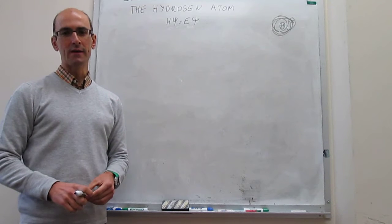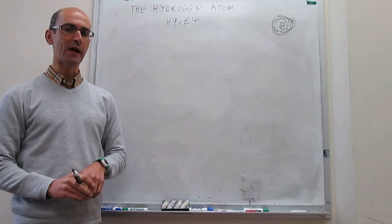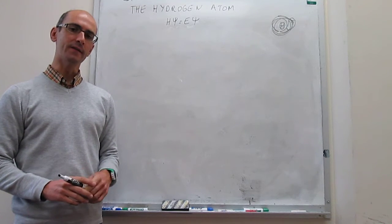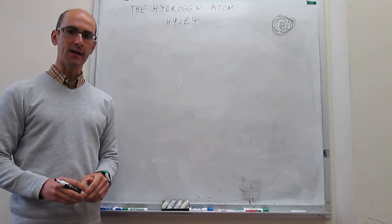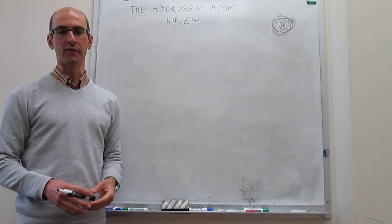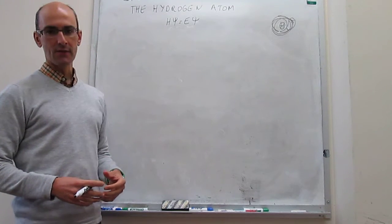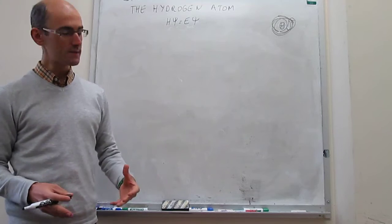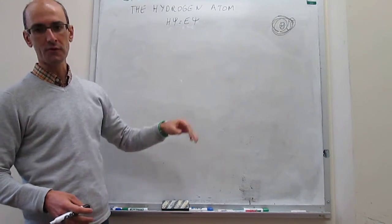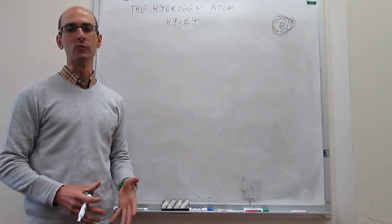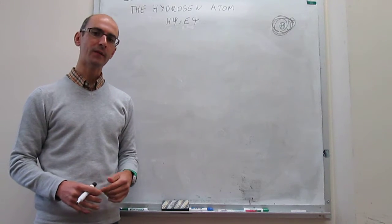In the last couple of videos we have set up the Schrödinger equation for the hydrogen atom and talked about the possible quantum numbers that solve that equation. Now we'll look specifically at the solutions. We have two of those: the energy and the wave function. In this video we're going to be talking about the energy.